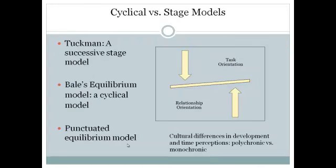Tuckman's model is definitely a stage model. But what about a cyclical model? Robert Bales' model of equilibrium says there are two basic activities in a group: one is orientation toward the task, where you're moving toward the goal; the other is relationship orientation, where you're forming friendships and camaraderie. So sometimes you're doing the business of the group, and other times you might be joking, forming friendships, or resolving personality issues. According to Bales, the group shifts from one to the other.